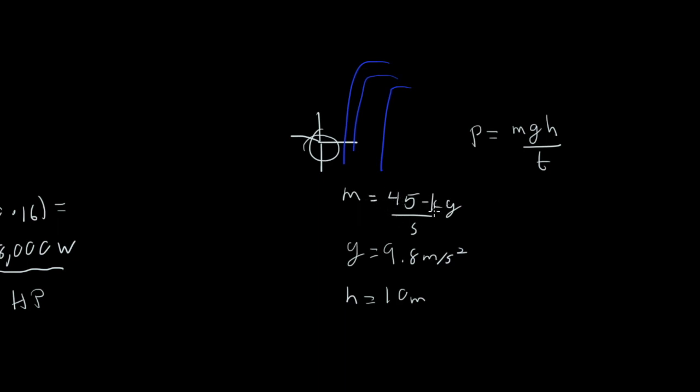And since I'm saying 45 kilograms per second, well then I've got 45, that's my time and my mass together. So I take that 45 times 9.8 times 10. That's going to give me 4,410 watts. That's actually a pretty good power generator. That could keep one or two houses powered pretty much all day.